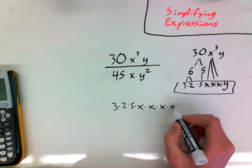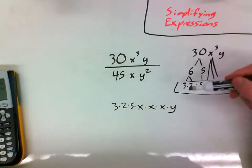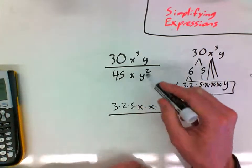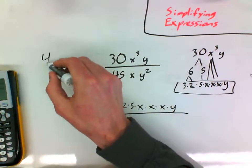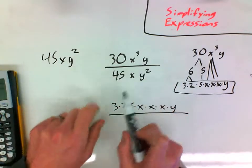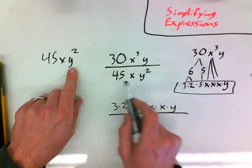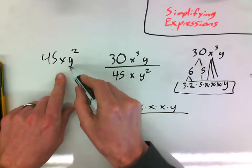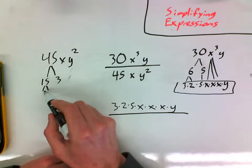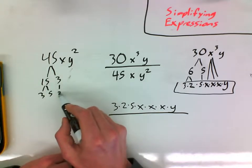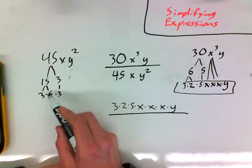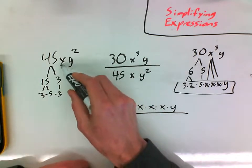This is called making a prime factorization, another thing that's commonly called is making a factor tree. X to the third is just 3 x's and y is just the y right there. So I wrote 30x to the third y, I rewrote that as 3 times 2 times 5 times x times x times x times y. Now at this point you may be saying like we're trying to simplify expressions, this looks more complex than that. We need to break it apart to see what cancels out. So I'm going to do the same thing here with 45xy squared.